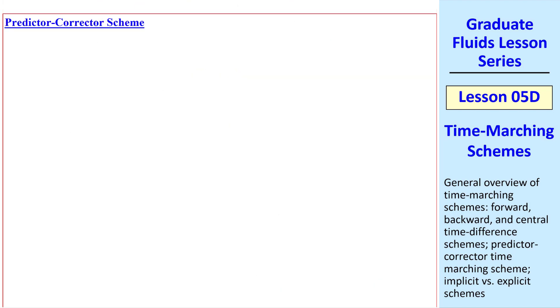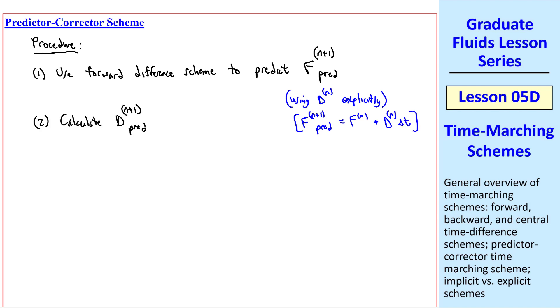Finally, let's discuss the predictor-corrector scheme. Here's the procedure. The first step, use forward difference scheme to predict fn plus 1, and we'll put a subscript, pred, meaning predicted. Just like the forward scheme, we're using dn explicitly. So our equation is the same as the forward scheme, fn plus 1 predicted is equal to fn plus dn delta t. Step 2 is to calculate dn plus 1 predicted at fn plus 1 predicted, the value that we just calculated.